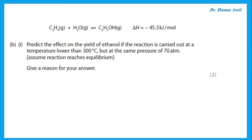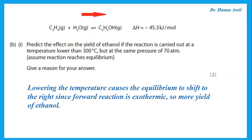Predict the effect on the yield of ethanol if the reaction is carried out at a lower temperature. Remember, in any reversible reaction, lowering the temperature causes the reaction to go to the side that is exothermic. For this reaction, lowering the temperature causes the equilibrium to shift to the right or go forward, since the forward reaction is exothermic. If the reaction goes more forward, it will produce more ethanol, so the yield of ethanol would increase.